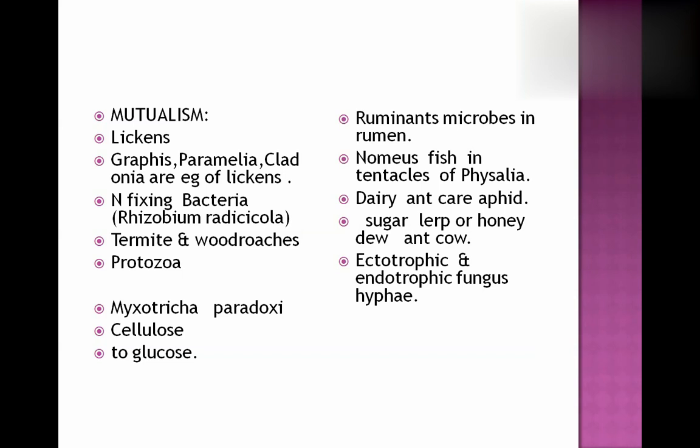Nomeus fish lives in the tentacles of Physalia. They get protection there and Physalia in turn gets prey which is attracted to Nomeus fish. Dairy ants care for aphids and in turn they get sugar secretions and honeydew from those aphids.